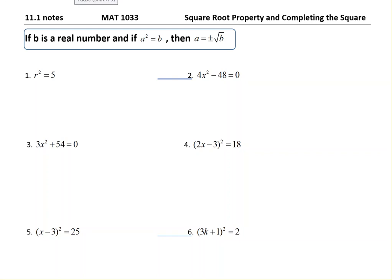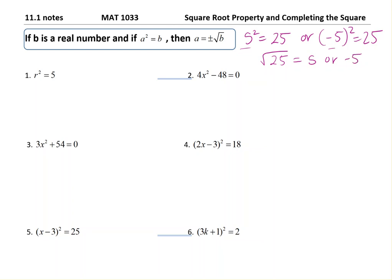In this video, we're going to be talking about the square root property and completing the square. We start with: if b is a real number and a squared equals b, then a equals plus or minus b. This is because squaring a number means multiplying it by itself — 5 squared equals 25, but also negative 5 squared equals 25. So if I was given 25 and took the square root, I'd have to account for both positive 5 and negative 5, because either could be a valid answer.